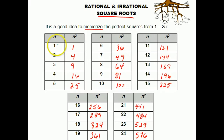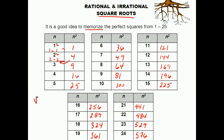Everybody has a good idea what's going on here. If I square a number, like 1 times 1 gives me 1, and 2 times 2 or 2 squared gives me 4. What a square root does is it kind of undoes what the square does. For example, for this 4, if I take the square root of 4, that's going to take me back to the 2 that I started with. So here's your first 25 perfect squares.